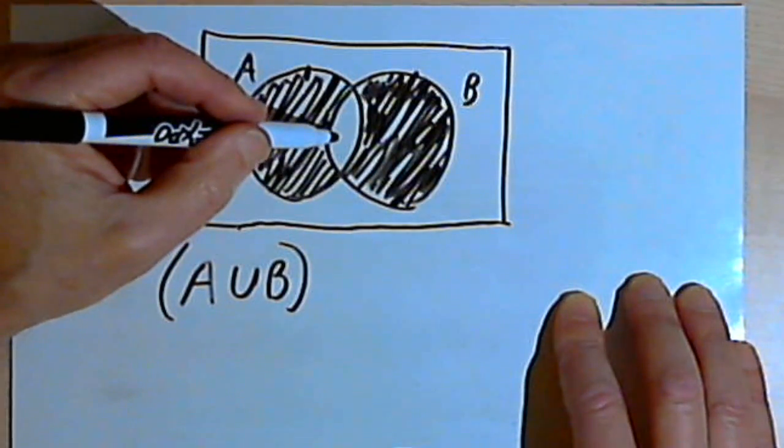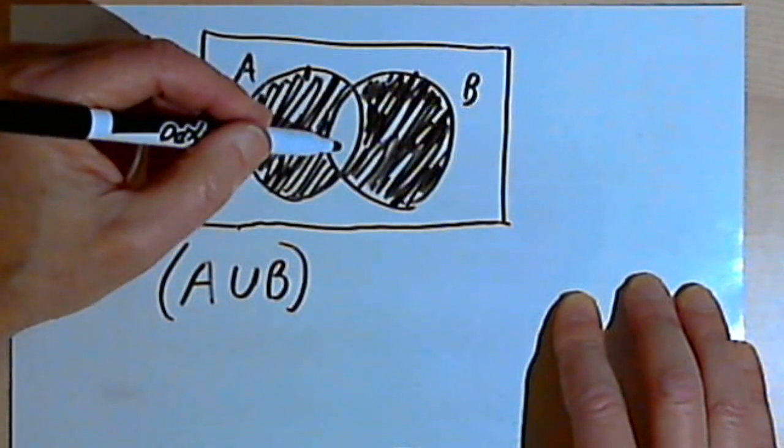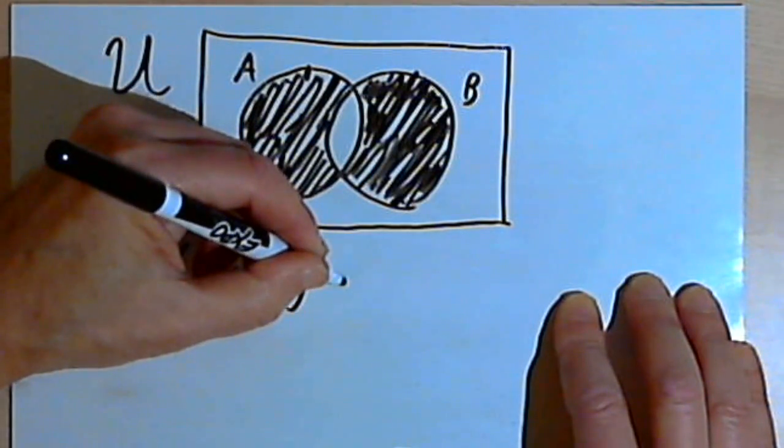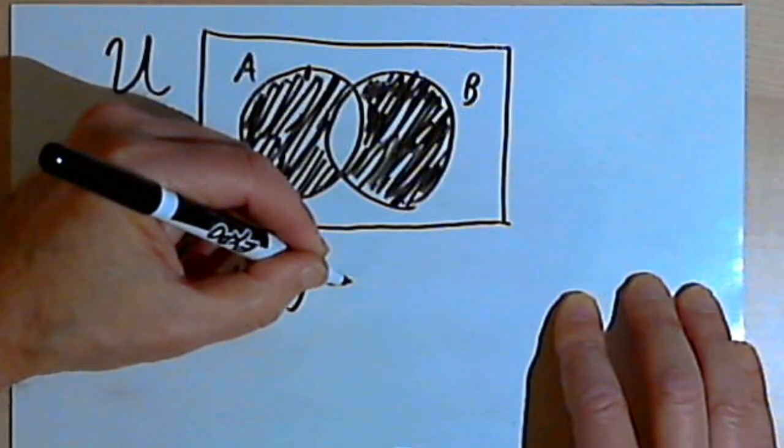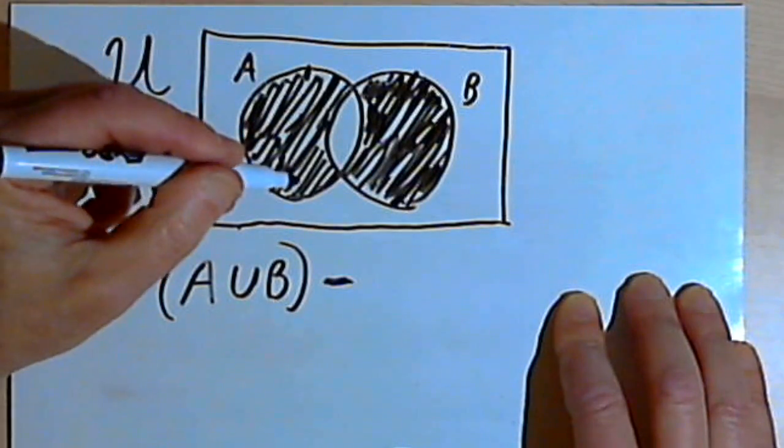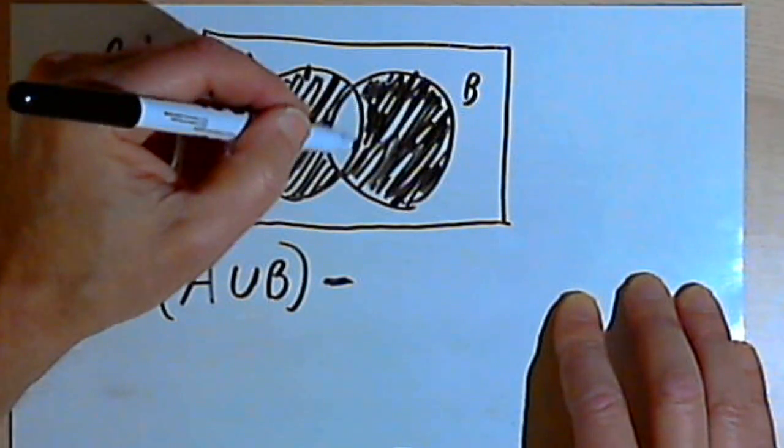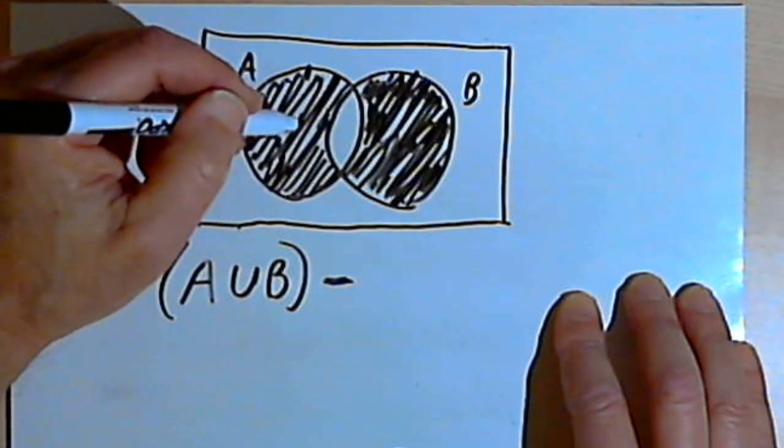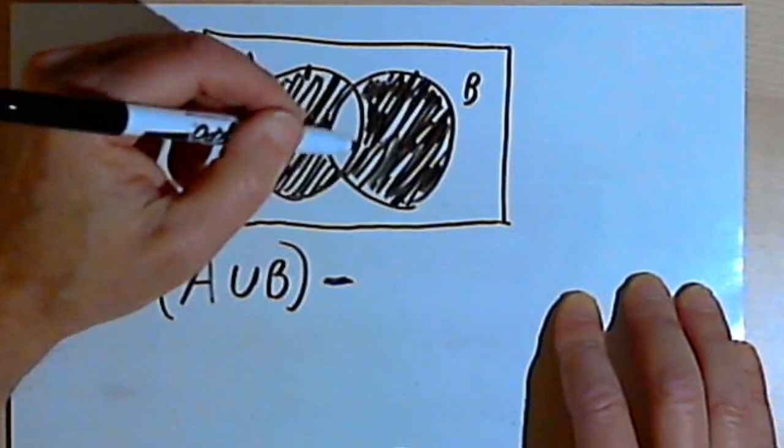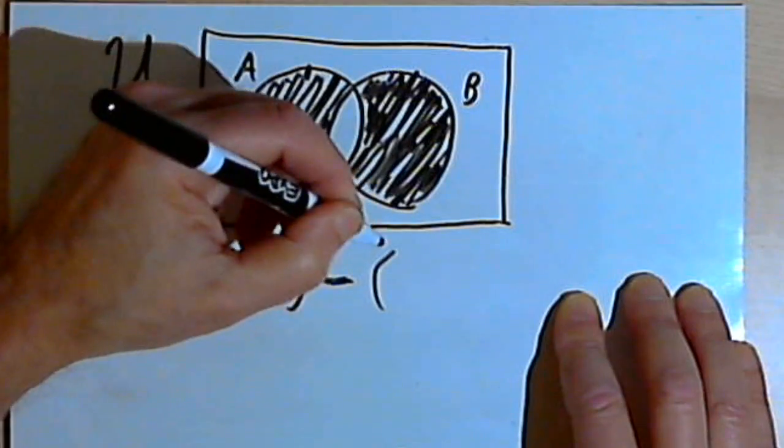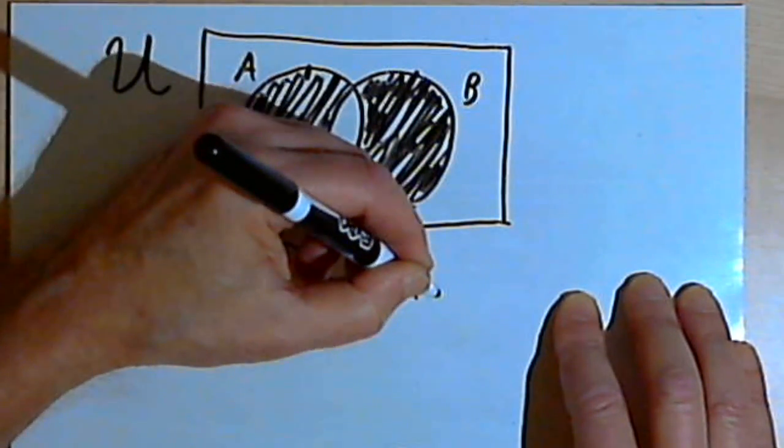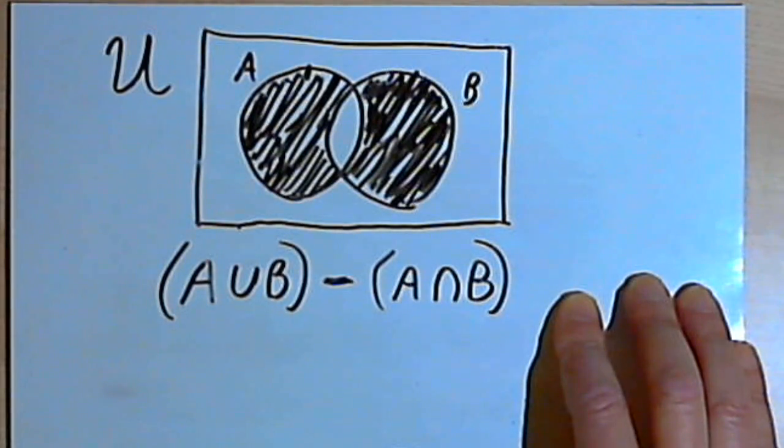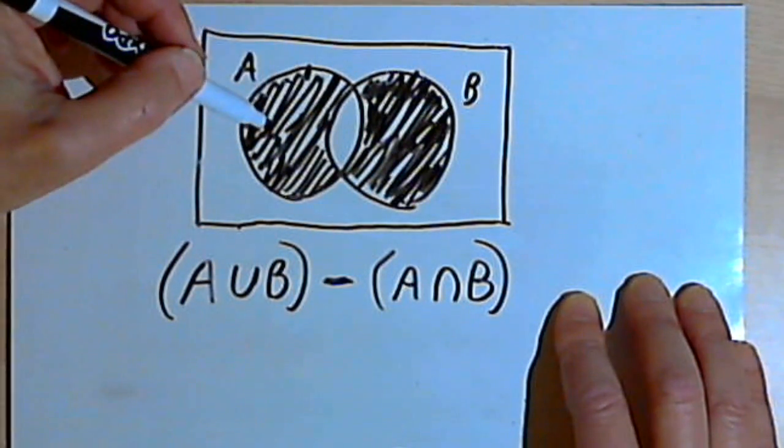And then I said except for the overlap. Well, except for makes it seem like I want to take something away from it. So I'll put in my minus sign for the relative complement. And then I want to take away the area that's in the overlap. Well, the area that's in the overlap is the intersection of A and B. So I'm going to take away A intersect B. And that will get us to this Venn diagram.